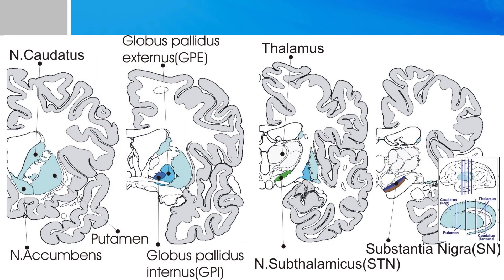Here you have a coronal view of different sections of the brain that demonstrates why some of the structures are called the way they are. The striatum is the combination of the caudate and the putamen because of their striated appearance. Moving further back, we start to see the globus pallidus come into view, and together the globus pallidus and the putamen are shaped like a lens and hence are called the lentiform nucleus. Notice how the subthalamic nuclei sits directly underneath the thalamus, and the substantia nigra sits just behind the crus cerebri.